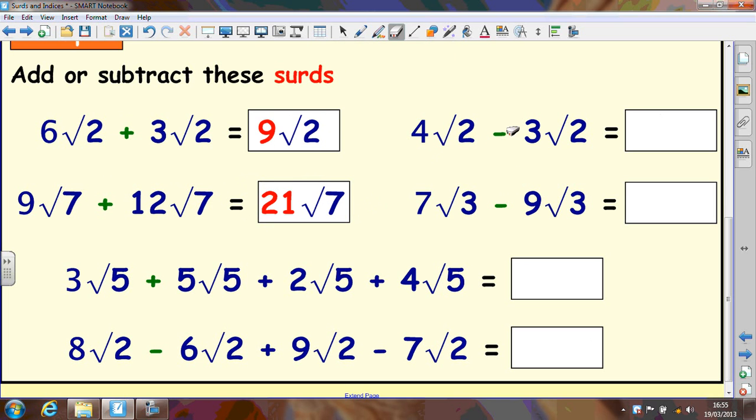We can also take away the same as we do with algebra. We've got 4 root 2 take away 3 root 2. That's just one root 2. We don't write the one at the front similar to 1x. 7 root 3 take away 9 root 3, that's going to be negative 2 root 3.